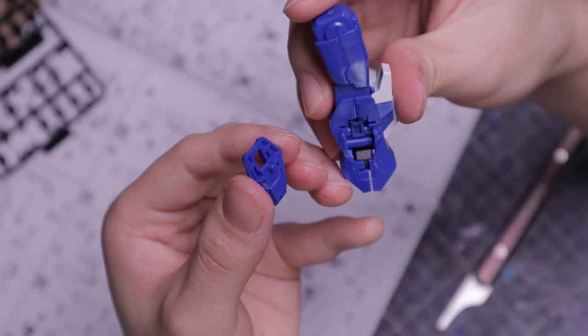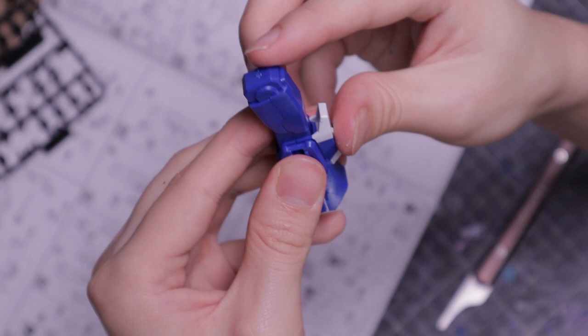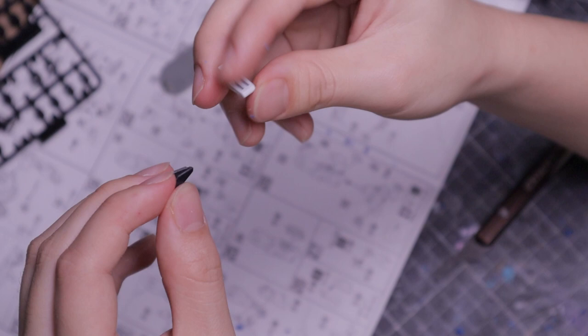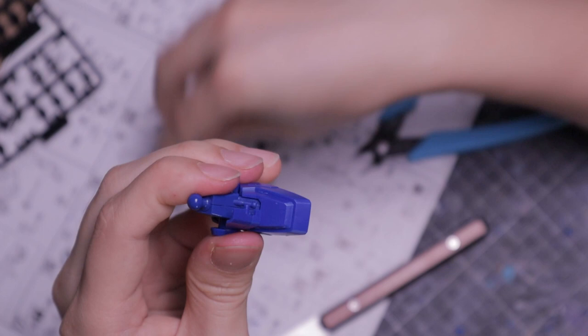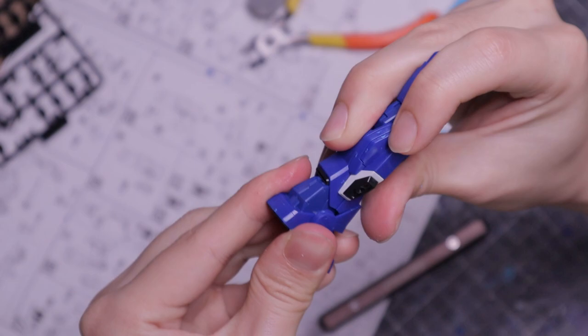Flip the leg around and insert B5. Insert B11 into B9. Join C19 onto C17. Attach B14 onto the foot and cover up with B12. Join subassembly 20 onto the leg, followed by the thrusters. Then connect the feet to the leg. Rinse and repeat for the left leg.